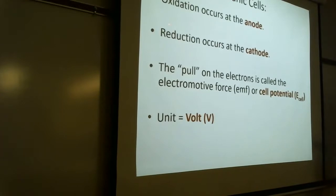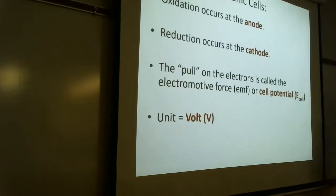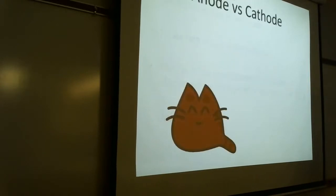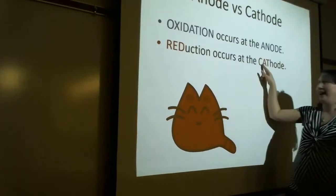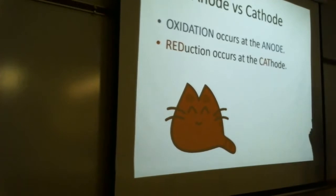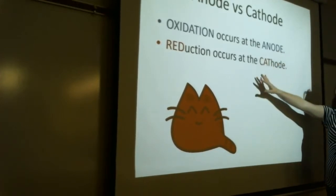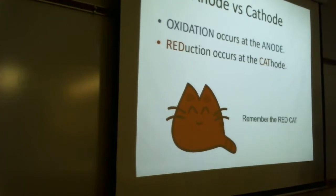Oxidation is at the anode, reduction is at the cathode, and the cell potential is the pull on these electrons. Just remember: Red Cat — reduction at the cathode. If you remember red cat, you can remember that oxidation must occur at the other option, the anode. The cathode is positively charged — think of a cation — and the anode is negatively charged.